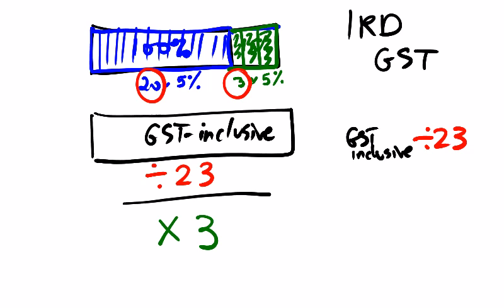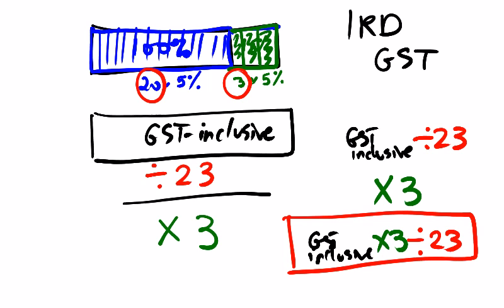The order doesn't matter, if you decided you wanted to first get the GST inclusive amount, multiply by 3, and divide by 23, you would always get the same answer anyway.